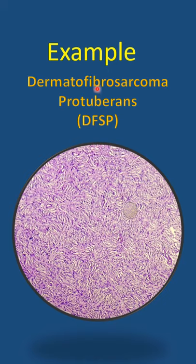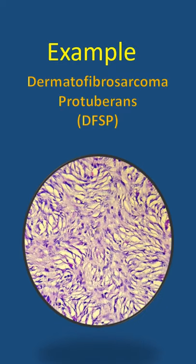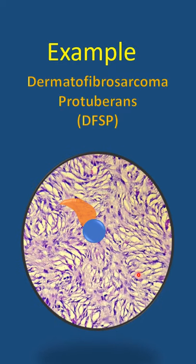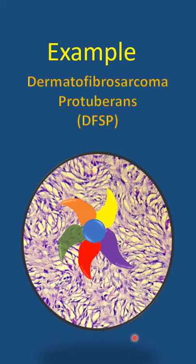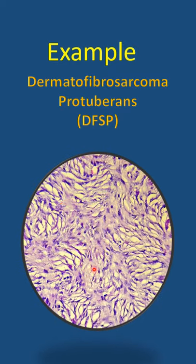An example for this pattern is Dermatofibrosarcoma Protuberans. This is a high power view, and if you observe the spokes of the pinwheels, this is the pattern that is formed by the tumor cells. Tumor cells are basically spindle cells.